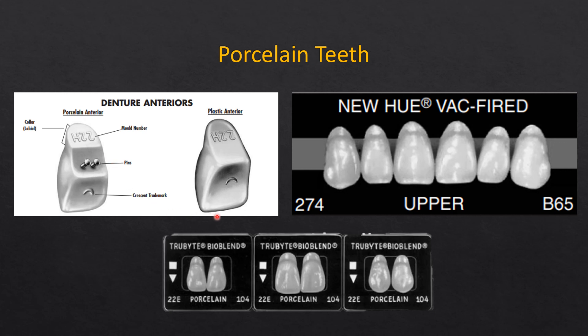The use of porcelain teeth has diminished significantly over the past two decades. Porcelain teeth are very difficult to trim when there is limited occluso-gingival interarch space due to prior eruption of opposing teeth or other reasons. Also, there is no chemical bond between the denture base and porcelain teeth — metal tags or metal pins are needed to retain them mechanically — making dislodgement of porcelain teeth very common.